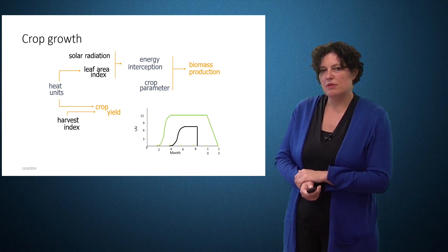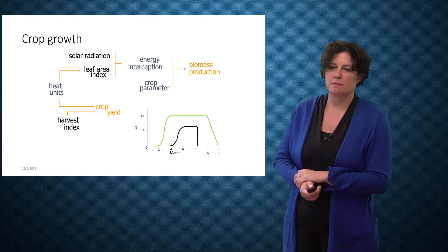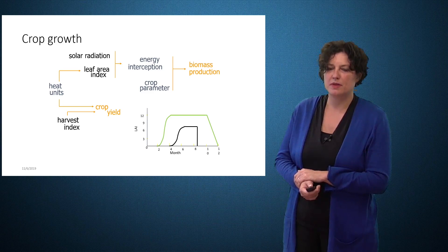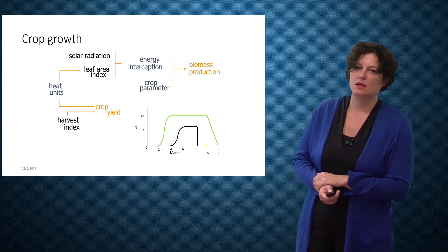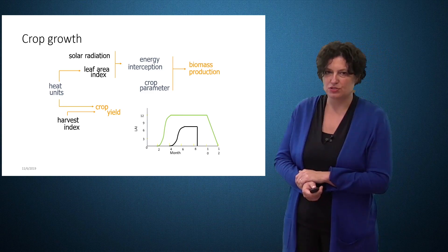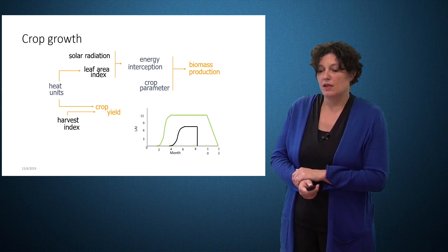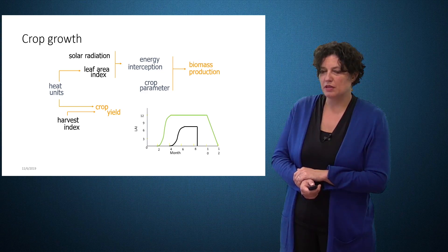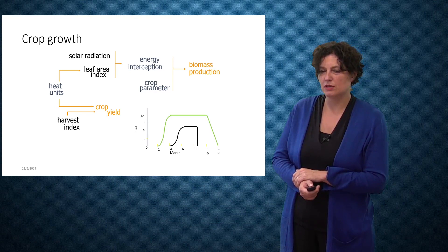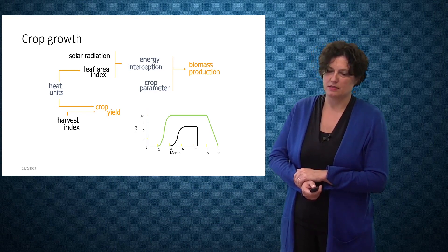Also within SWAT, we represent the crop growth. Crop growth is basically implemented on the basis of heat units. So it's driven by temperature mainly. If we reach certain heat units, we may trigger, for instance, the growth of the plants or we can also trigger the harvesting of the plants.